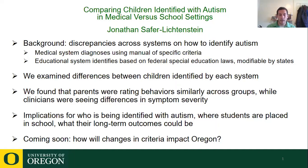We had a sample of children — some with a medical diagnosis of autism and some with only a special education eligibility — and we wanted to look at differences between these groups. We found that parents were rating behaviors similarly across the groups, looking at adaptive behaviors like daily living skills, communication, and challenging behaviors.